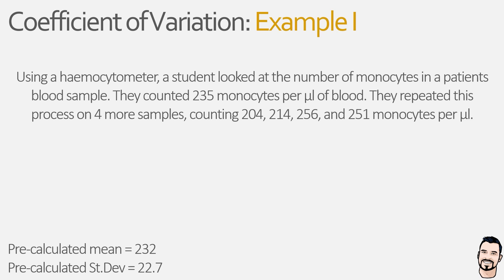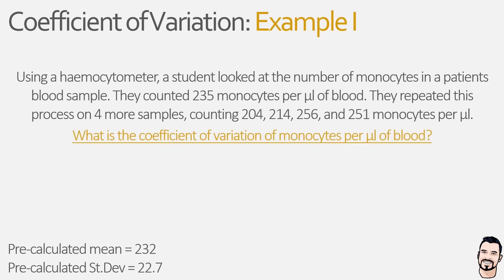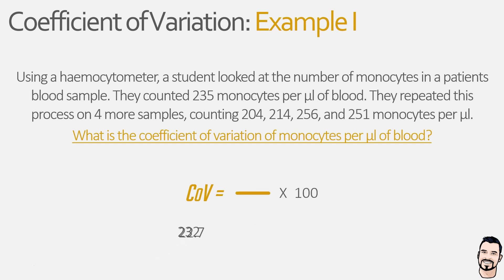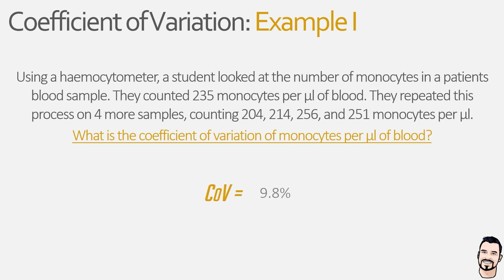This student now wants to know how dispersed their data is as a ratio of the mean — i.e., what is the coefficient of variation of monocytes per microliter. To do this we use our equation, where s becomes our standard deviation and x-bar becomes our arithmetic mean. We simplify by dividing the standard deviation by the mean, giving us 0.098, which is then multiplied by 100 to give us the coefficient of variation as a percentage — which for this dataset is 9.8%.